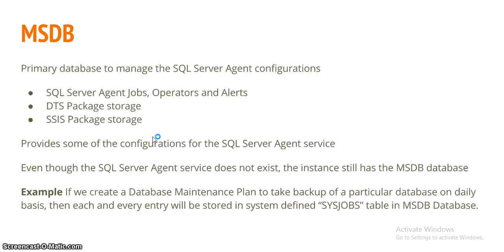Next is msdb, the primary database to manage SQL Server Agent configurations. These configurations include SQL Server Agent jobs, operators, alerts, DTS package storage, and SSIS package storage. It provides some configurations for the SQL Server Agent service. Even if the SQL Server Agent service does not exist on an instance, the msdb database is still present. For example, if we create a database maintenance plan to take a backup on a daily basis, entries will be made to the sysjobs table in msdb.